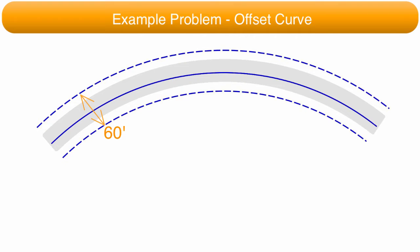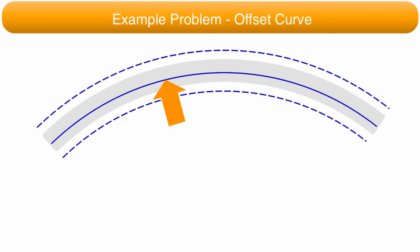The horizontal curve for the center of the highway goes from station 23+00 to 33+20.32. The curve has a degree of curvature of 2 degrees, 55 minutes, 6 seconds. To solve for the curve information on the right-of-way, it is necessary to solve the parameters for the center of the highway curve.